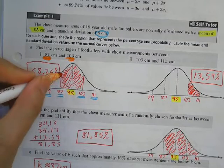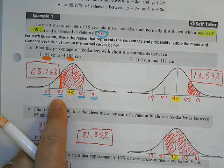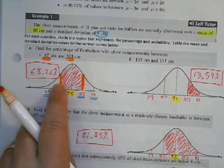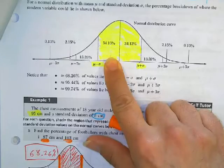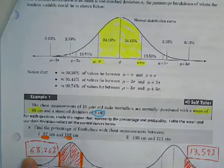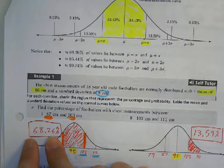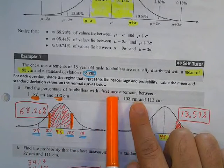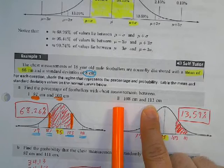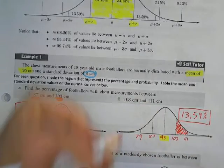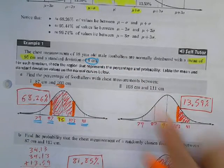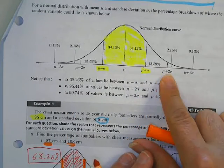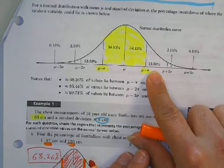87 is one standard deviation below the mean and 103 is one standard deviation above, so we add those two regions together to get 68.26%. For the next part — chest measurements between 103 and 111 centimeters — 103 is one standard deviation above and 111 is two standard deviations above the mean. From the chart, between one and two standard deviations is 13.59%.